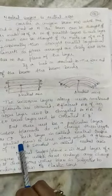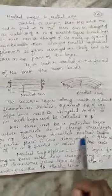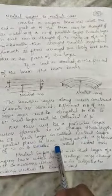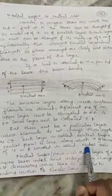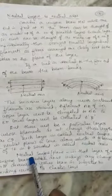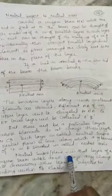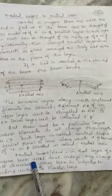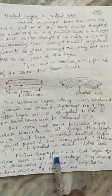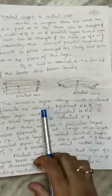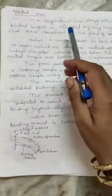Such a layer is called the neutral surface or neutral plane. The neutral surface or plane is that layer of a uniform beam which does not undergo any change in its dimensions when the beam is subjected to bending, within the elastic limit.